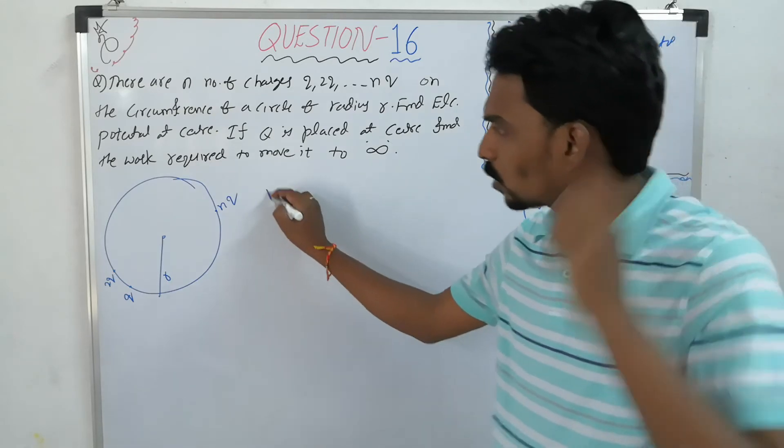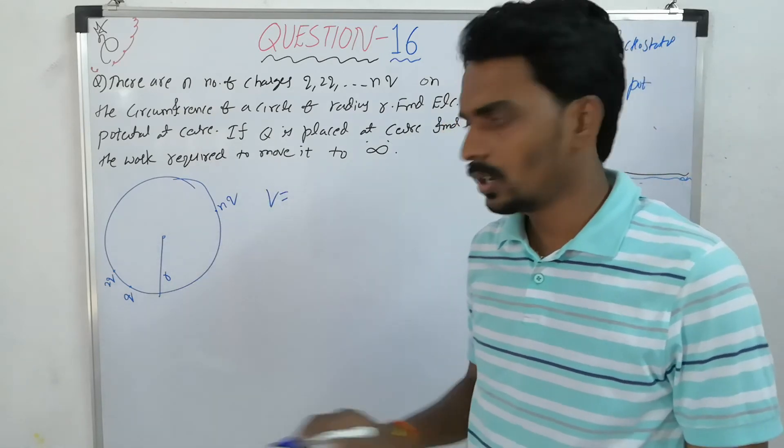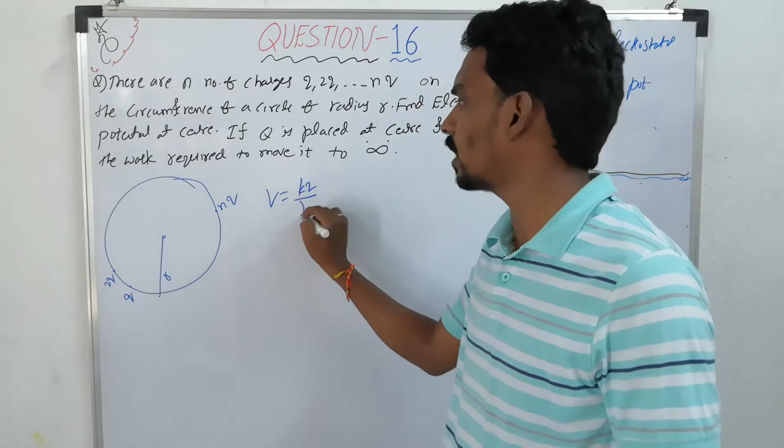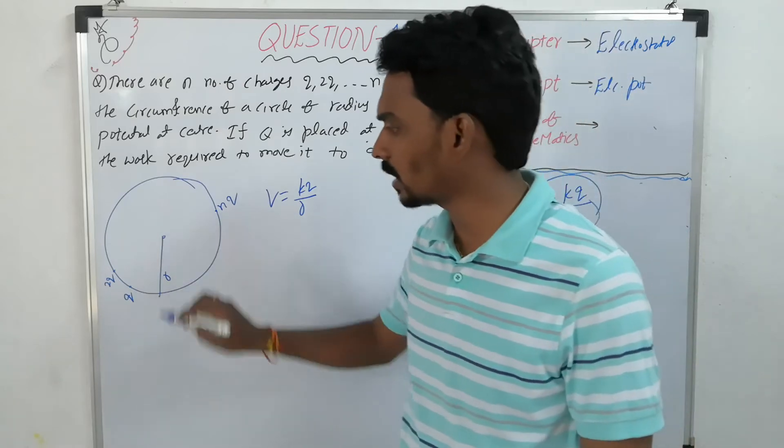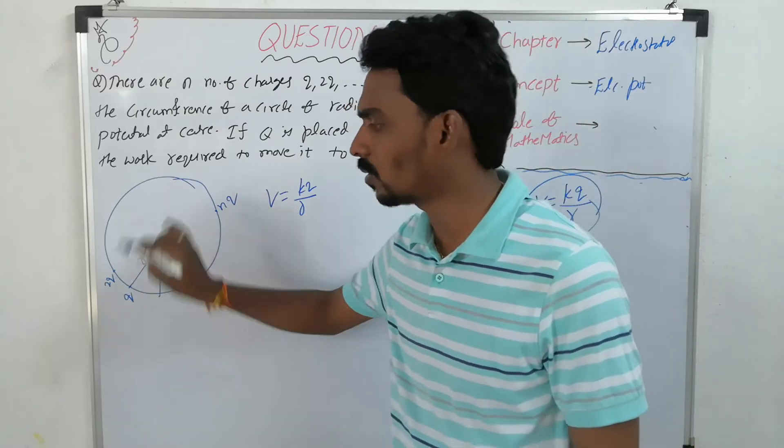Let's say, what is the total potential at the center? Due to one charge, the potential is KQ by R. Because all charges are on the circumference, from the center each charge distance equals the radius.